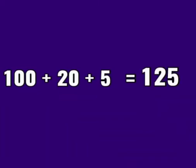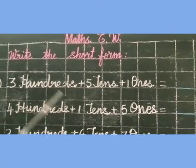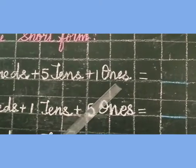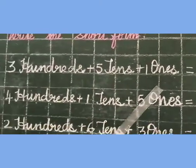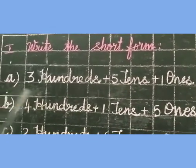Let's do the exercise. First one: 300 plus 5 tens plus 1 ones. See, this is in expanded form. Now I am going to teach the short form. I will teach you an easier method.